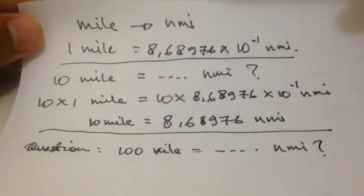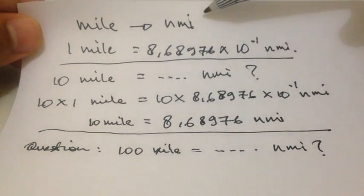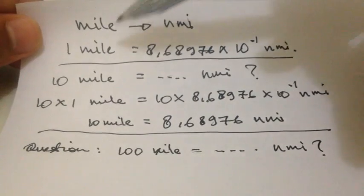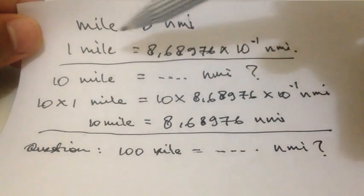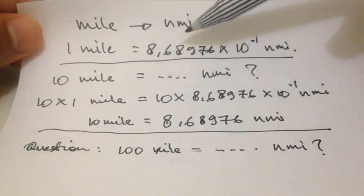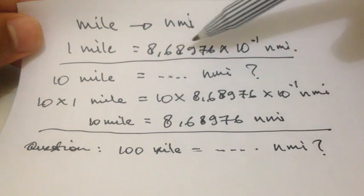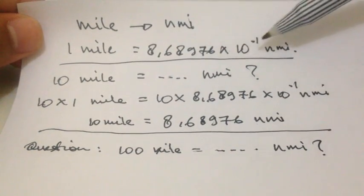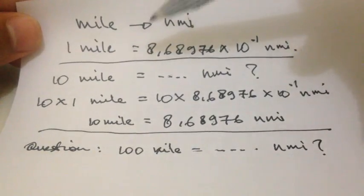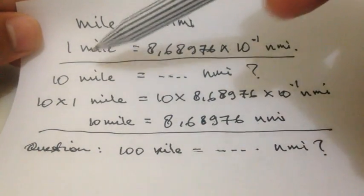Hello, it's QN1. Today we are going to convert mile into nautical mile. Well, the basic rule: 1 mile is equal to 8.68976 multiplied by 10 power minus 1. Alright, here's the basic formula.